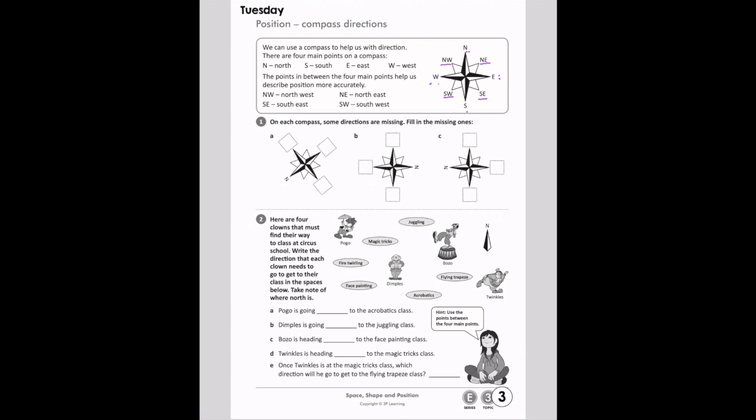Okay, so on each compass, there are some directions that are missing. Fill in the missing ones. Remember to look at north. Find north, and then what would this be? What would this be? What would this be? There's north. What comes next? Here's north. What comes next?